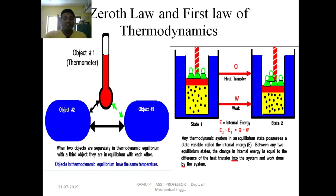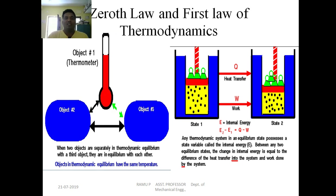The zeroth law of thermodynamics states that when two objects are separately in thermodynamic equilibrium with a third object, they are in equilibrium with each other. For example, a thermometer placed in contact with the human body: the thermometer and body reach the same temperature through heat exchange. This principle forms the basis of temperature measurement — any body's temperature can be measured because both reach thermodynamic equilibrium with the thermometer.